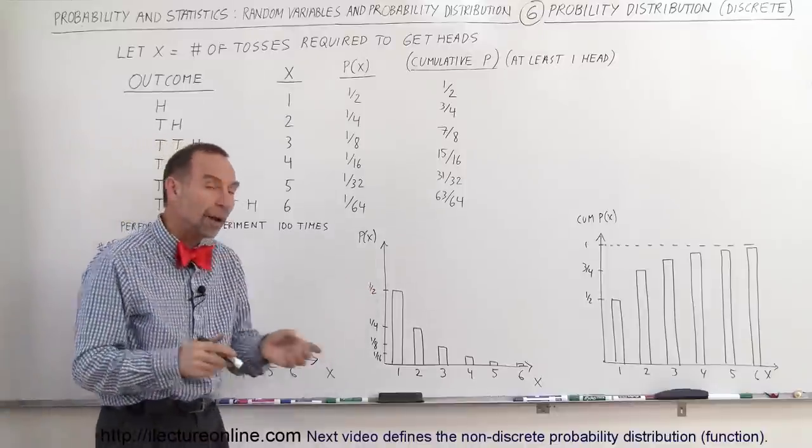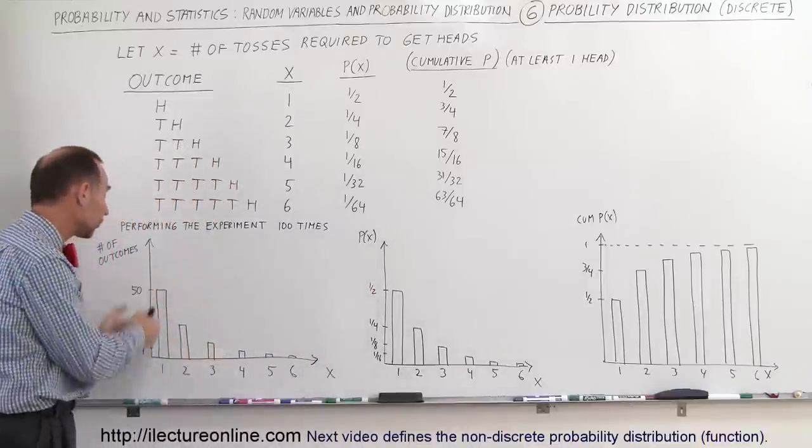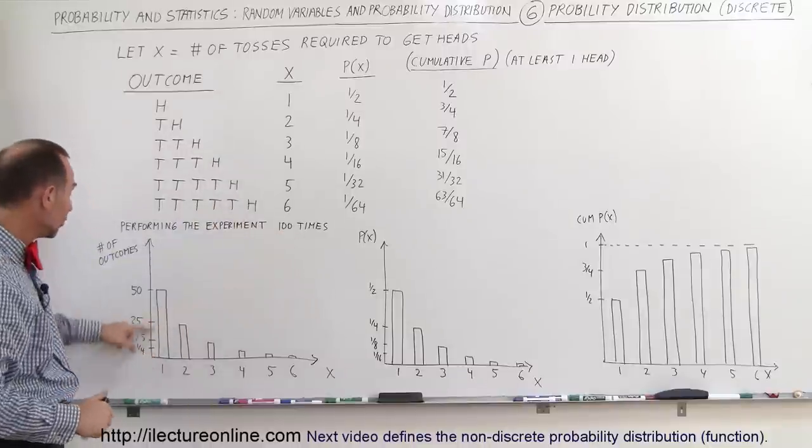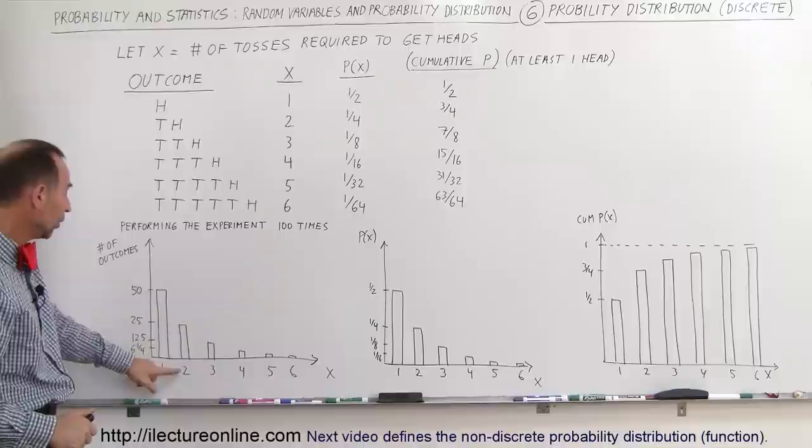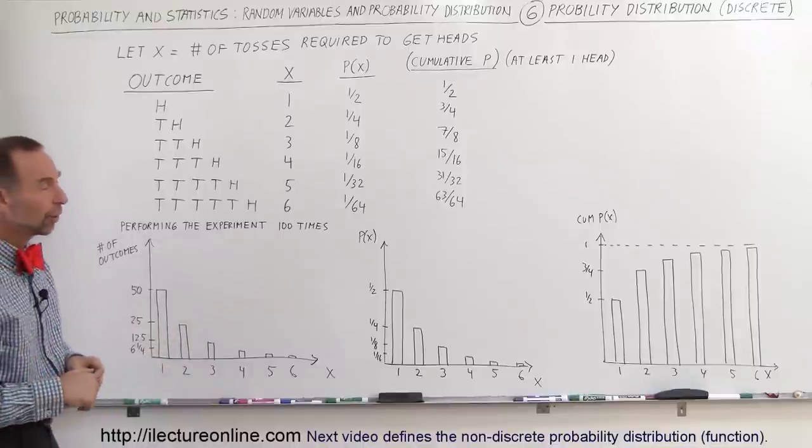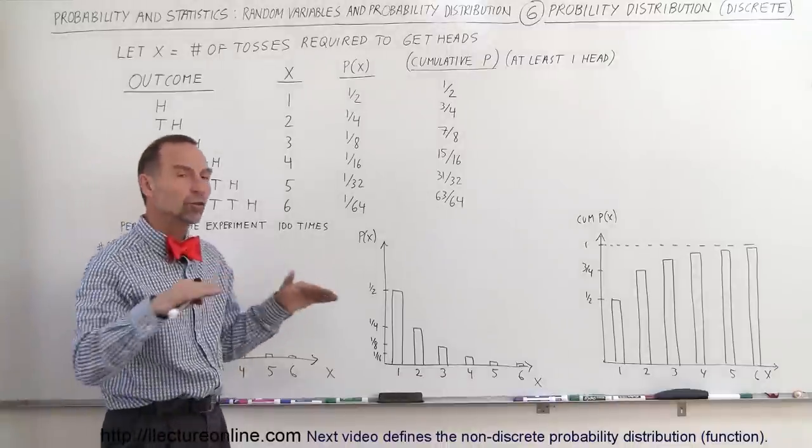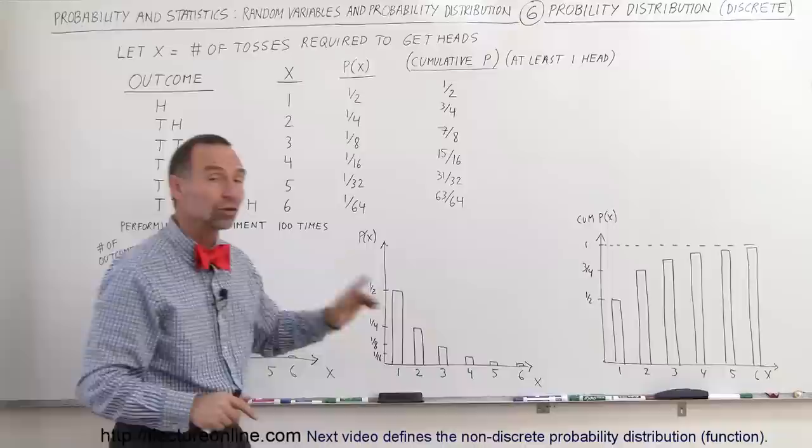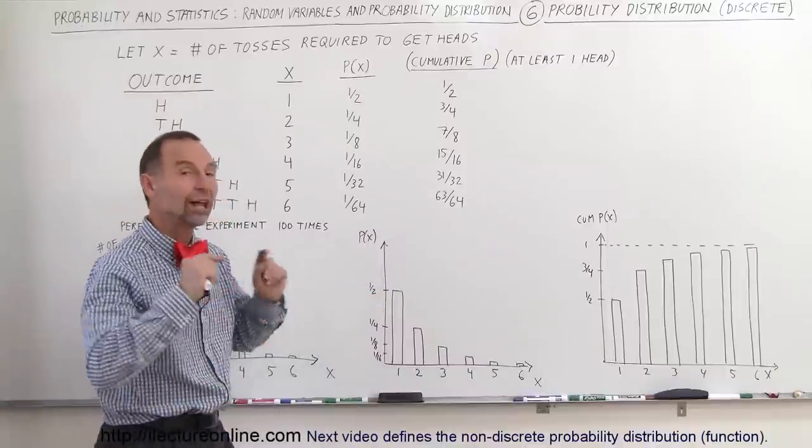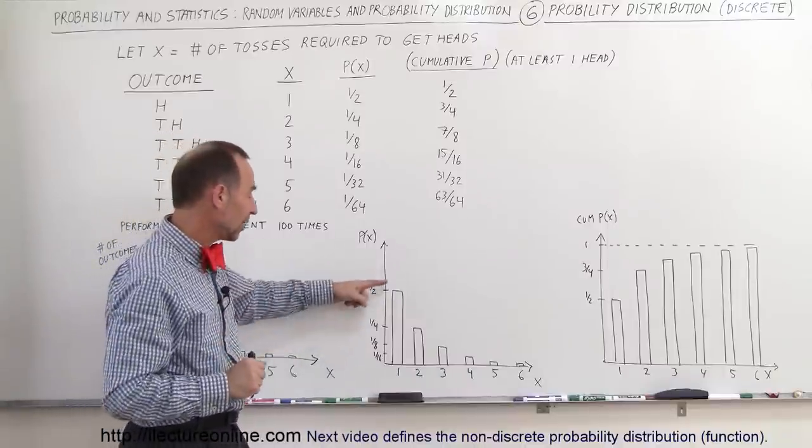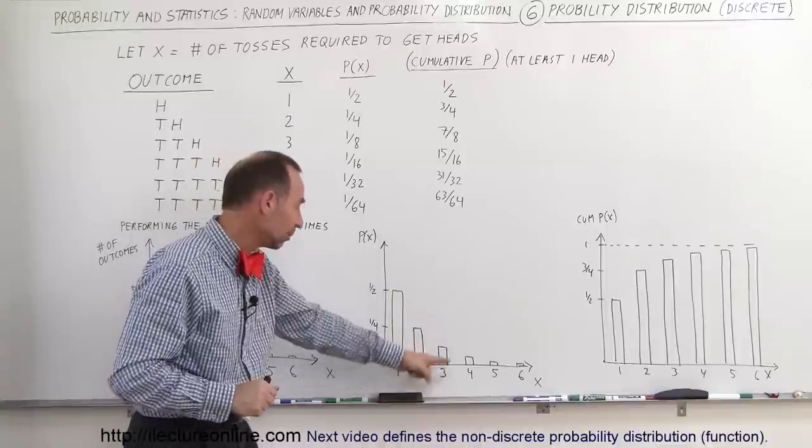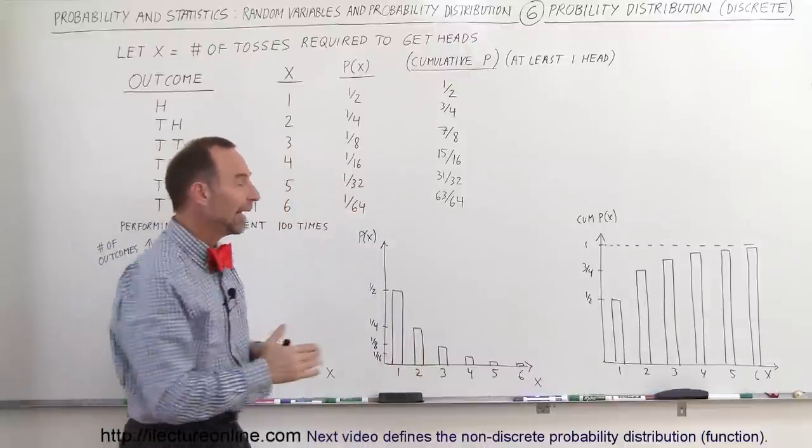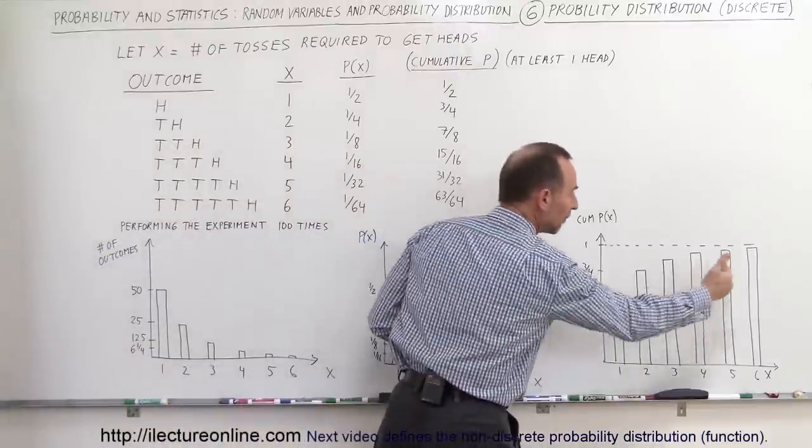Here we actually draw the probabilities rather than the number of occurrences out of the total number of experiments. If this was 1,000, then you would have 500 for x equal 1, 250 for x equal 2, and so forth. But a probability distribution, everything is normalized in such a way that when you add up all these values, they should all add up to 1. That means if we add up 1 half plus a quarter plus an eighth plus a sixteenth plus a thirty-second plus a sixty-fourth, that will add up to 1 eventually, and this is what this graph depicts.